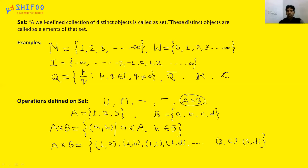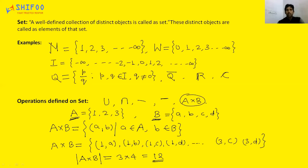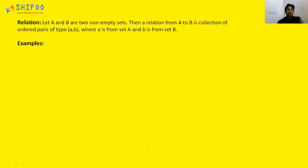If you ask how many elements are in A cross B — A has 3 elements and B has 4 elements, so the cardinality of A cross B is 3 cross 4, giving 12 elements total. This is some briefing about sets and operations on them. Now I will come to relations.